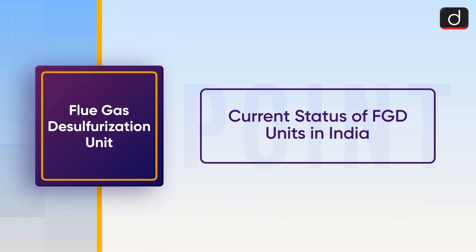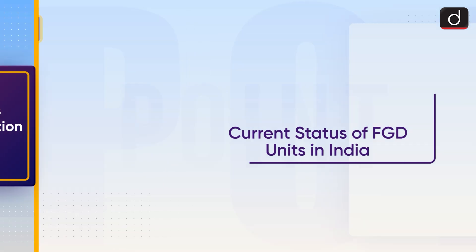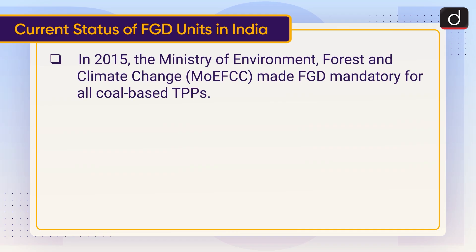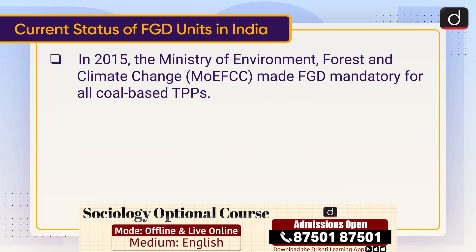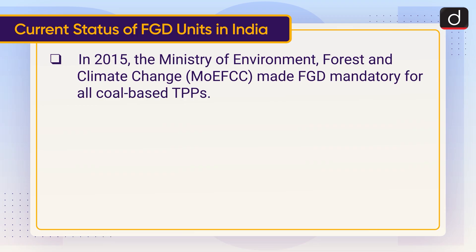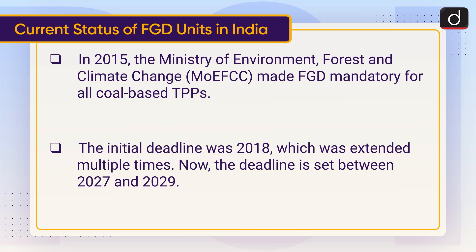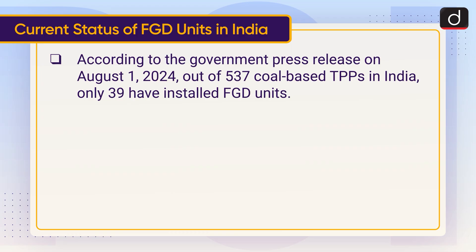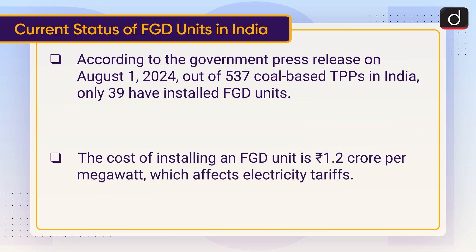Regarding the current status of FGD units in India: in 2015, the Ministry of Environment, Forest and Climate Change (MoEFCC) made FGD mandatory for all coal-based thermal power plants. The initial deadline was 2018, which was extended multiple times — the deadline is now set between 2027 and 2029. As per a government press release on August 1st, 2024, out of 537 coal-based TPPs in India, only 39 have installed FGD units. The cost of installing an FGD unit is 1.2 crore rupees per megawatt, which affects electricity tariffs.